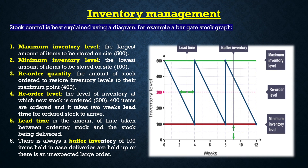400 items are ordered and it takes two weeks lead time for ordered stock to arrive. Lead time is the amount of time taken between ordering stock and the stock being delivered. There is always a buffer inventory of 100 items held in case deliveries are held up or there is an unexpected large order.